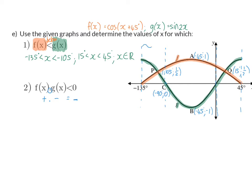So, if we look at our first interval, we can see here that both graphs are above the x-axis, so positive, and that will not give us a negative product.